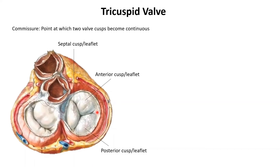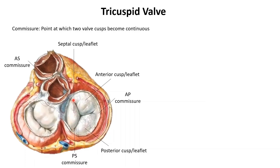Since this point is between the anterior and the posterior cusp, this is called the anterior-posterior commissure. This point is between the posterior and the septal cusp, so this commissure is called the posterior-septal commissure. And this commissure right here would be called the anterior-septal commissure because it is in between the anterior and the septal cusps.